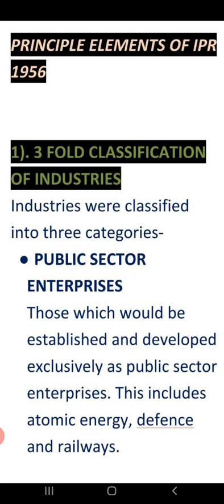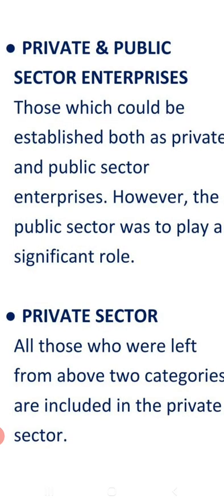The first division was public sector enterprises — all industries that are undertaken by the government. The second division was the mixed public and private sector — industries that exist in both the public sector and the private sector. The third division was the private sector — all those industries which were not in the above two categories, those were categorized in the private sector.